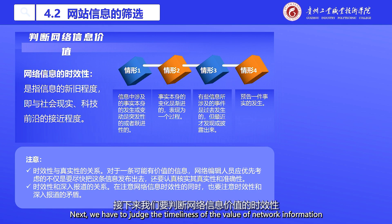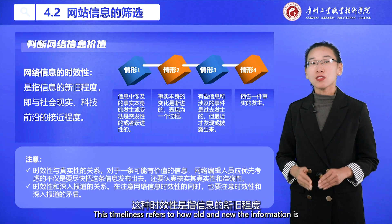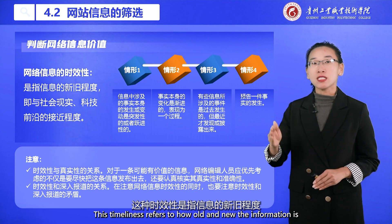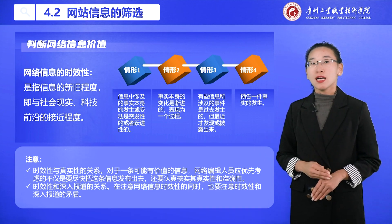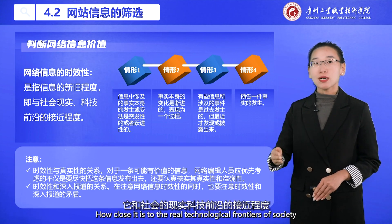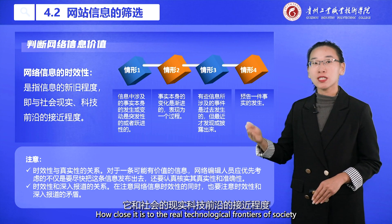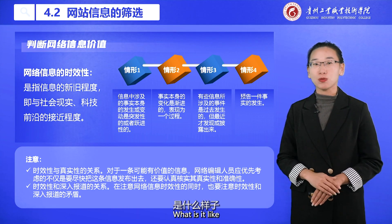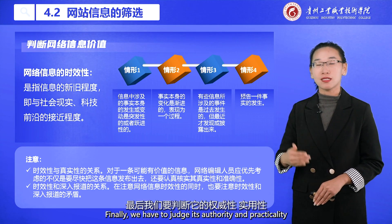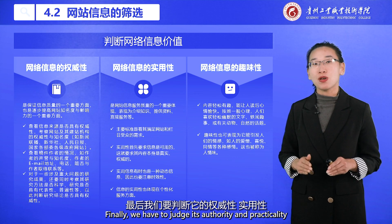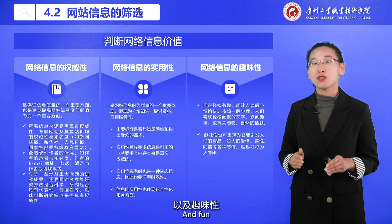Next, we have to judge the timeliness of network information value. Timeliness refers to how old or new the information is, and how close it is to the real technological frontiers of society. Finally, we also have to judge the authority, practicality, and interest of the information.